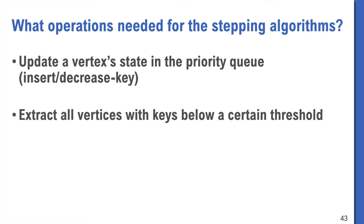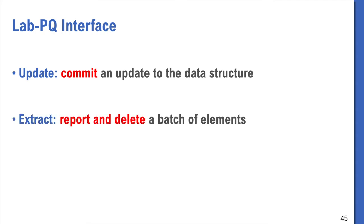What we need in the stepping algorithm framework seems to be two operations. The first one is to update a key, either insert or update if it's already in the data structure. The other is to extract all vertices with keys below a certain threshold, output and delete them. Which are these two functions here? The function update, which is executed asynchronously, means to commit an update to the data structure. Extract means to report all elements smaller than a threshold and delete them.